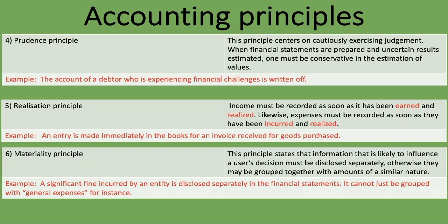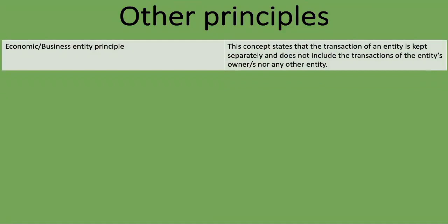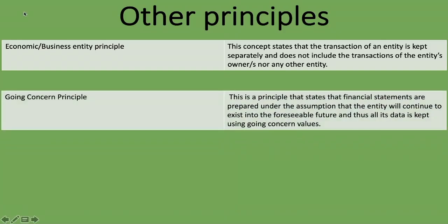There are a few other principles to consider. The business entity principle states that the transactions of an entity are kept separately from those of its owners and any other entity. The going concern principle states that financial statements are prepared under the assumption that the entity will continue to exist into the foreseeable future, and thus all its data is recorded using going concern values.